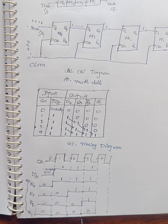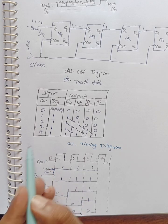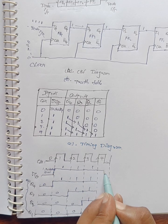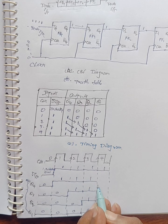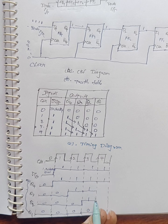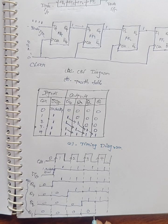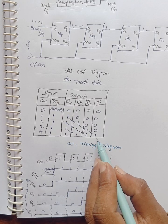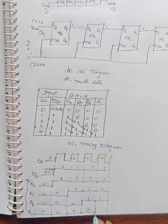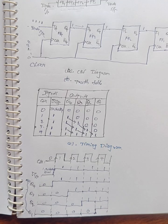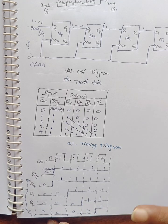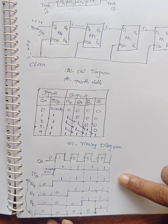Whenever the fourth clock pulse is applied, input data is again one. Q4 equals one, Q3 equals one, Q2 equals one, and Q1 also becomes one. This is the timing diagram of the 4-bit shift right register.